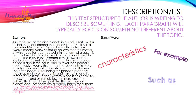Let's look at this example. Jupiter is one of the nine planets in our solar system. It is called the giant among the planets because it has a diameter ten times as big as the Earth. It also has twelve moons. Many scientists believe that the matter of which Jupiter is composed is in the form of a gas. It is not solid like the rock that makes up the Earth and the moon. Scientists do know that Jupiter's rotation period is about ten hours and its revolution period is about twelve years, meaning Jupiter spins very rapidly on its axis as it makes its orbit around the Sun. The atmosphere surrounding the planet is probably made up mainly of ammonia and methane, and its temperature is far below zero. Since it has no water, no oxygen, and extremely low temperatures, it is unlikely that it could support life. This giant among planets does not seem like a friendly place for humans. Here we see that there is great detail given about the planet Jupiter — they are describing Jupiter.